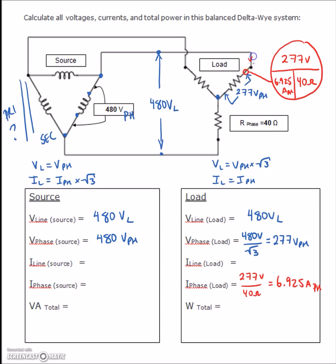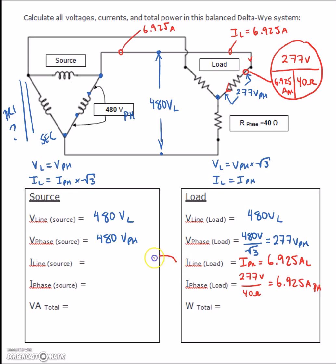There is only one path for current to flow, so the line current equals the phase current — 6.925A. For the Y, I_line = I_phase = 6.925A on the line. Following that across, we can see that same current carries over to the delta source side — 6.925A on the line.